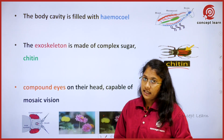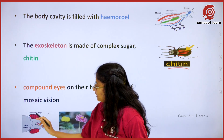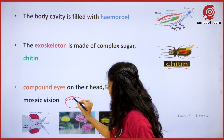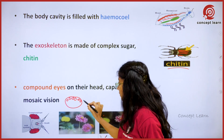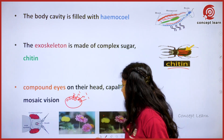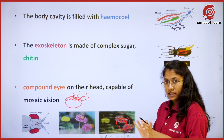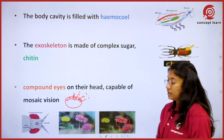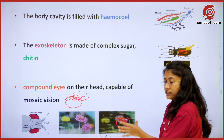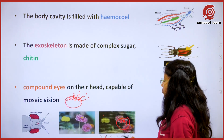Insects have compound eyes — two compound eyes are present in the insect. Within each compound eye there are several ommatidia. Each ommatidium is able to form a separate single image, and all these images together are combined to give mosaic vision. This is different from the normal image we obtain through our eyes; in insects, several ommatidia combine to give this mosaic vision.